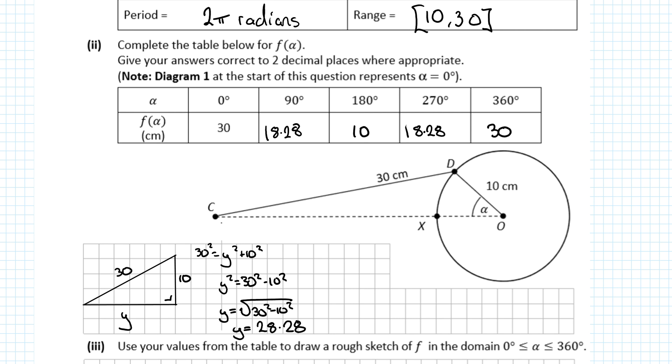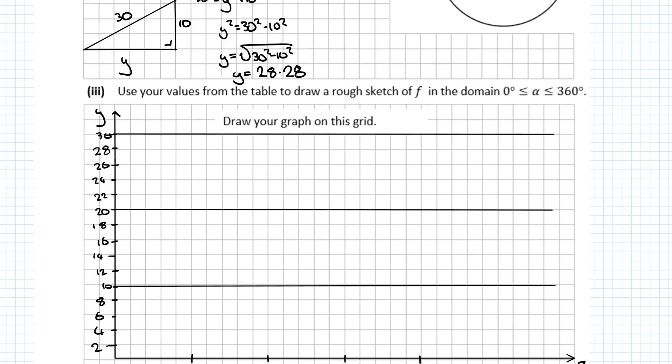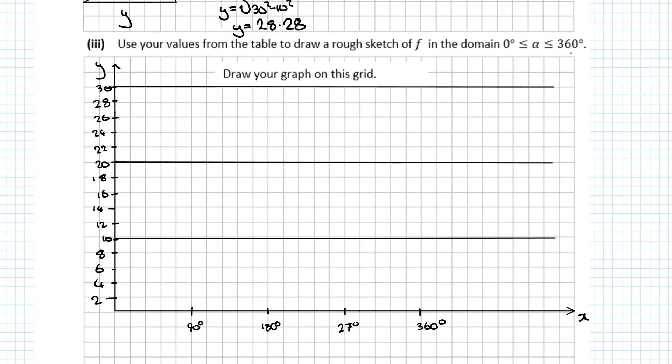The last one, 360°, is when D is all the way around here. The distance would be the full CD length of 30. Now drawing the graph - it says only between 0° and 360°. At the start it's 30, at the end it's 30. Halfway through at 180°, it's at minimum distance of 10.